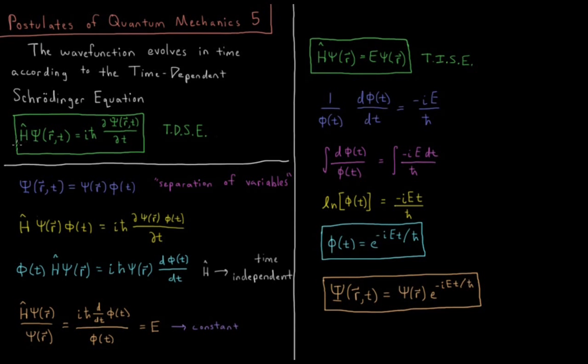Now we've seen the time-independent Schrödinger equation thus far, H psi equals E psi, and the time-dependent Schrödinger equation is that H psi of RT, some function of position, maybe x, y, z, equals I h-bar times the first partial derivative of psi with respect to t.